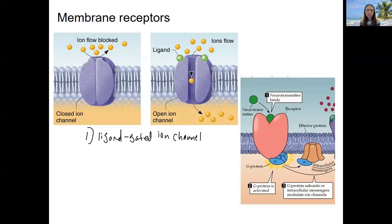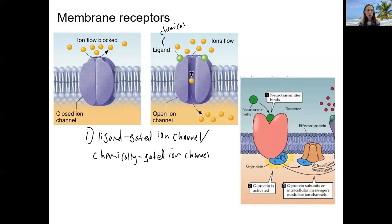This is also called a chemically gated channel, because a ligand is a chemical. A ligand is a chemical messenger that binds to a receptor. It could be a neurotransmitter if we're talking about a synapse, a hormone if it travels in the bloodstream, or a paracrine molecule if we're talking about local signaling. The ligand binds to an ion channel in the membrane and causes it to open.